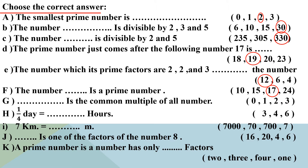After that: what is the common multiple of all numbers? Yes, the common multiple of all numbers is 0. So make a circle around 0.